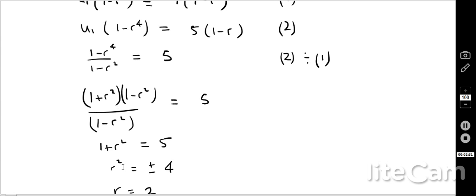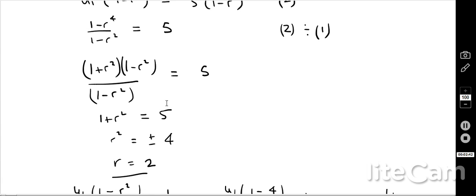And pretty easy from here. Therefore, r squared is plus or minus, well, sorry, it should be just r squared is 4. And then r is going to be plus or minus 2.